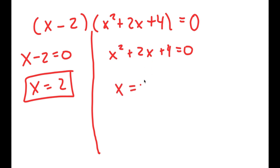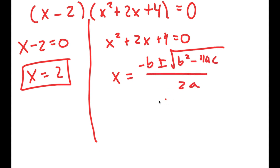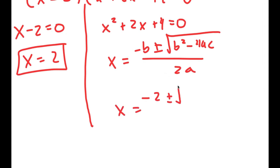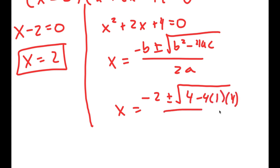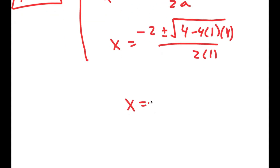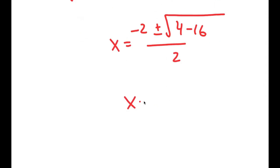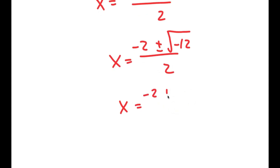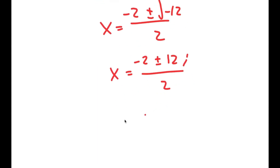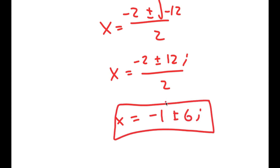To solve this I'm going to use the quadratic formula. I get negative 2 plus or minus the square root of 2 squared, which is 4, minus 4 times a, which is 1, times c, which is 4, all over 2 times 1. This turns into negative 2 plus or minus the square root of 4 minus 16 over 2, which is negative 2 plus or minus the square root of negative 12 over 2, which equals negative 2 plus or minus 2 times square root of 3 times i over 2, giving negative 1 plus or minus the square root of 3 times i. So these are the two more solutions to this equation.